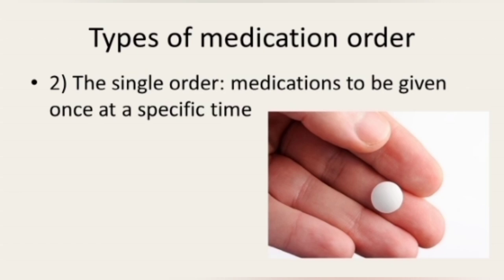The second type of medication order is a single order or one-time order, which is for a medication to be given once at a specified time. For example: Econel 100 mg at bedtime before surgery. A single order means the administration of a drug at a certain time, but only one time.